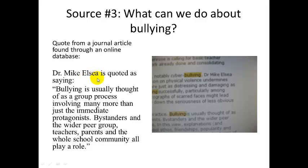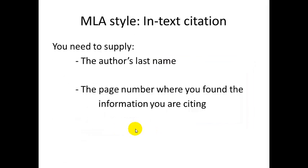This is a quotation from Dr. Mike Elsie, who is quoted as saying bullying is usually thought of as a group process. I even took a picture of the screen where I found this information on the online database. So now I have all three sources. I'm going to start by talking about how I would document these sources in MLA style in the text of my paper — this is the in-text citation. In an in-text citation in MLA style, all I need to supply are the author's last name and the page number where you found the information you are citing. Author's name, page number — easy.